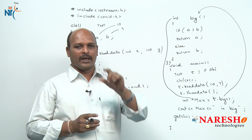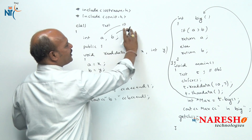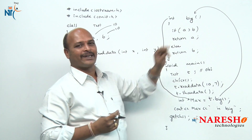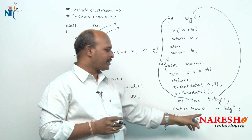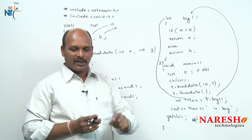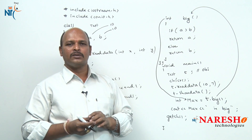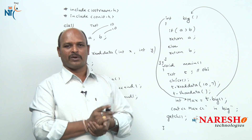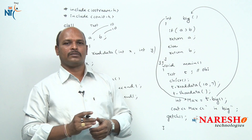There is one problem with this program. If both numbers are the same — for example, 10 and 10 — then 10 > 10 is false, so it returns b and says 10 is big. But actually it should say both are equal. How to handle that case will be covered in the next session. Thank you.